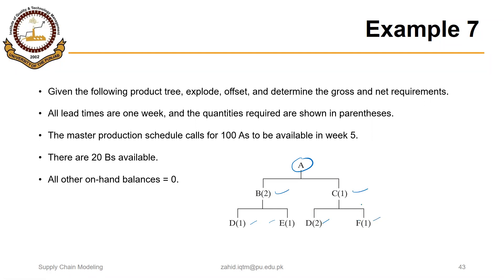Given the following product tree, explode, offset, and determine the gross and net requirements. All lead times are one week, and the quantities required are shown in parentheses. The master production schedule calls for 100 A's to be available in week 5. There are 20 B's available. All other on-hand balances are 0.